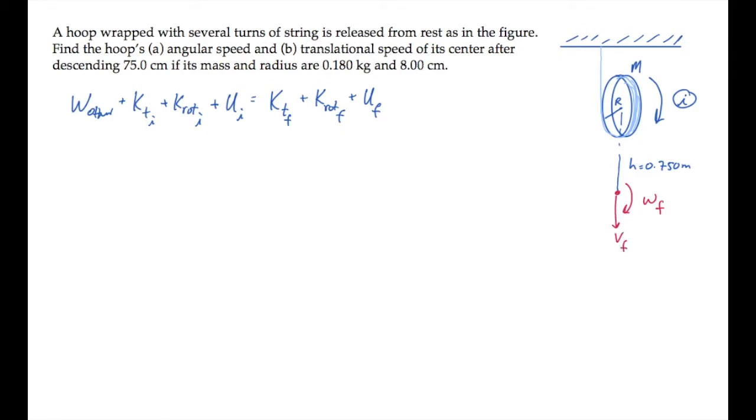Now we can evaluate terms on the left-hand side. In the initial state, nothing's moving, so the initial translational and rotational kinetic energies are both zero. If we identify this level as y equals zero, there's no potential energy in the initial state. And in between the initial and final states, there's no work done by other forces. So on the left-hand side, we just have zero, and that equals the sum of energies on the right-hand side.